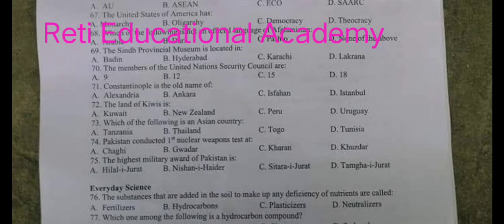Question number 74. Pakistan conducted its first nuclear weapon test at? A. Chagai. The correct option is A. Chagai.